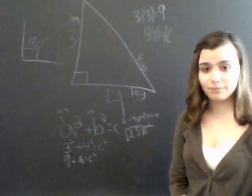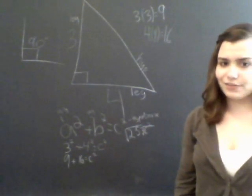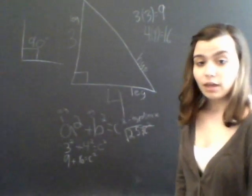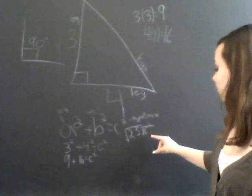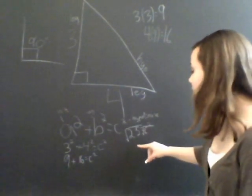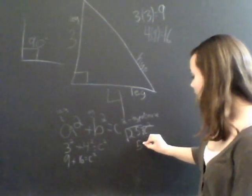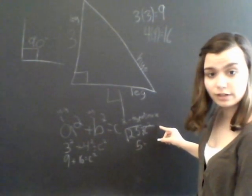You find the square root. This can be done on any regular calculator, scientific calculators. Some just basic ones will have a square root function as well, or if you just have it memorized. So the square root of 25 is five. And the square root of C squared is C.